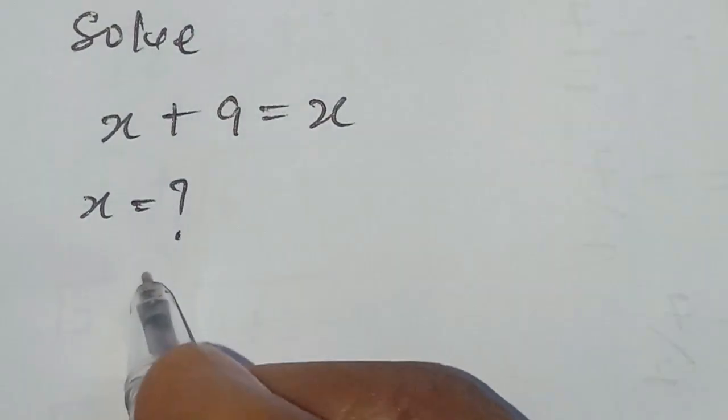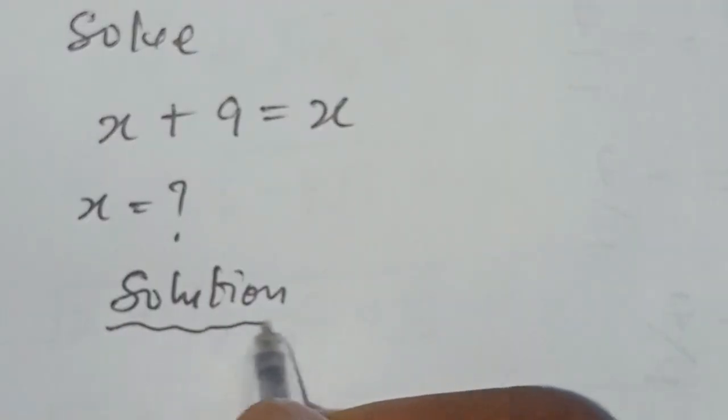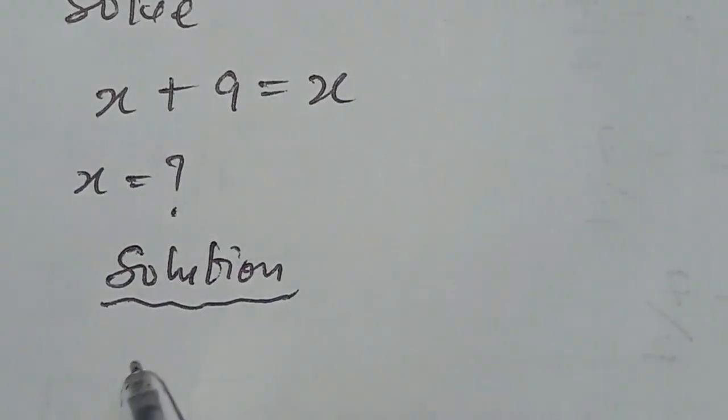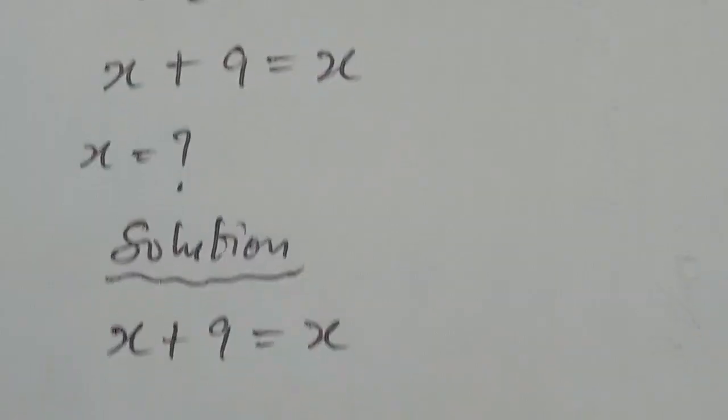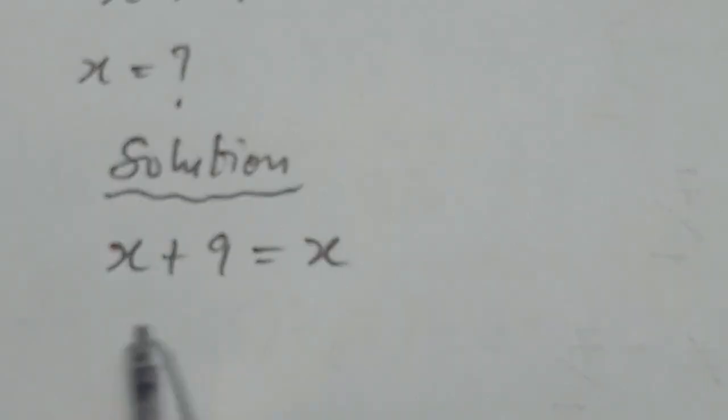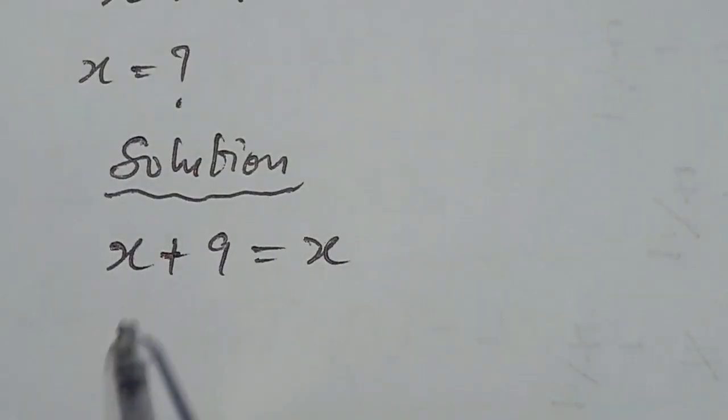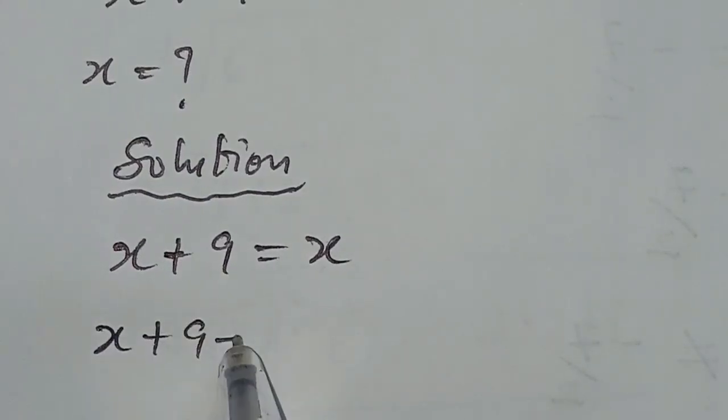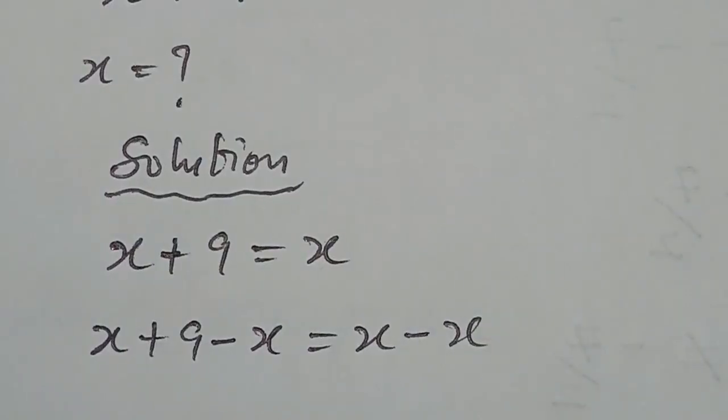Solution. Here we have our question to be x plus 9 equal to x. Next, the first thing here is to subtract x from both sides. We have x plus 9 minus x equal to x minus x.